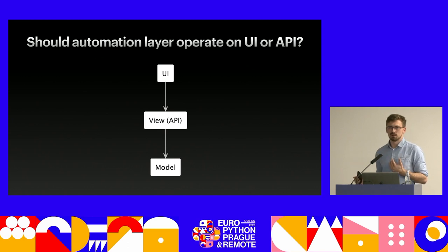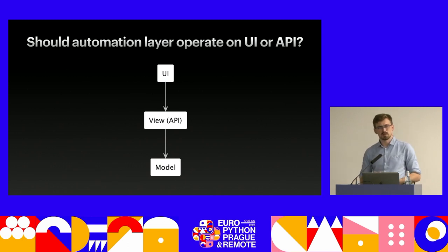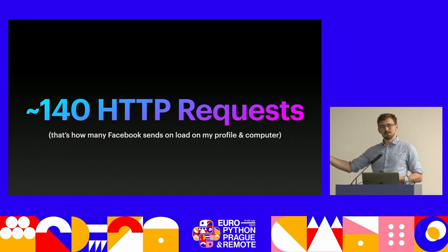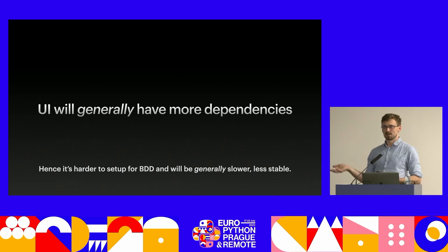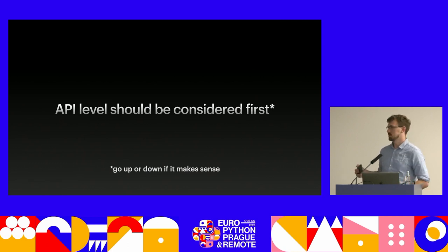The automation layer — all the code behind the steps — is where we focus on making the solution maintainable and deduplicated. Before jumping into implementation, let's talk about which layer to automate BDD on. What I see over and over is starting with UI, maybe with Selenium. I don't think that's the right approach in most cases — especially with single-page applications. When I open Facebook, it sends 140 HTTP requests in the background. That means more dependencies, more setup, slower tests, and harder maintenance.